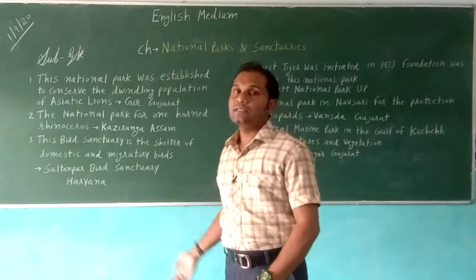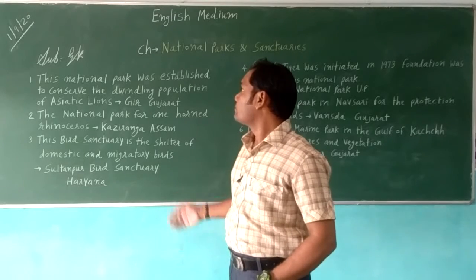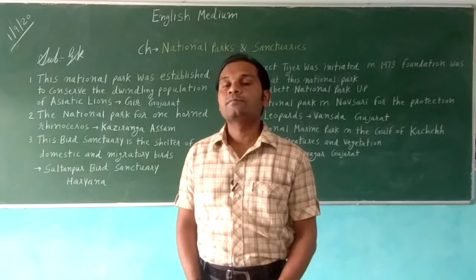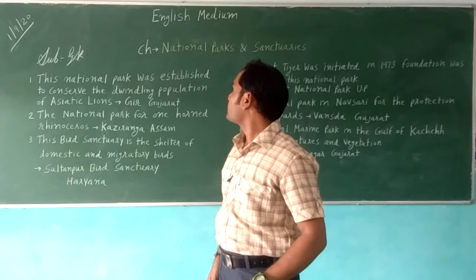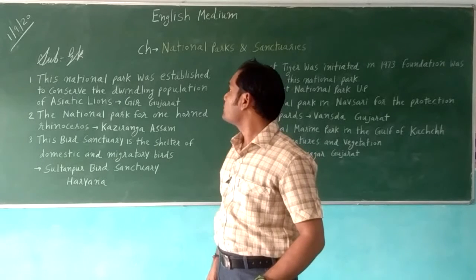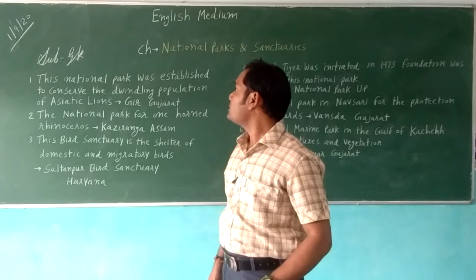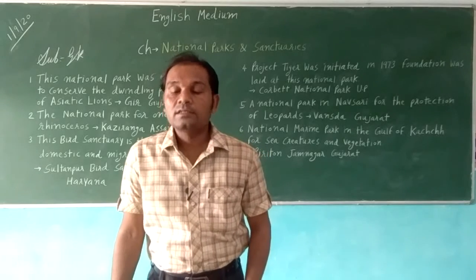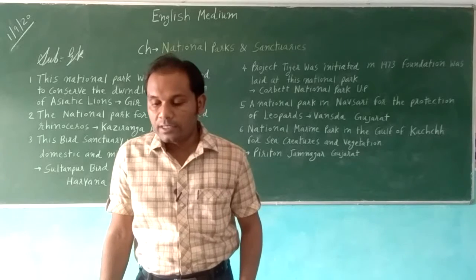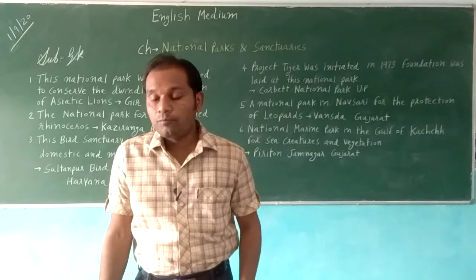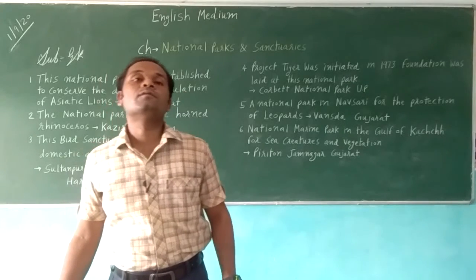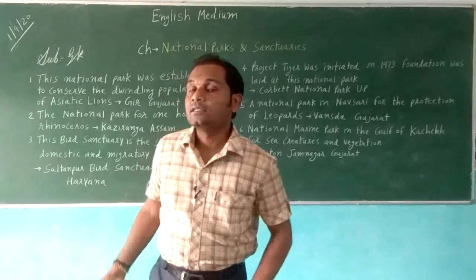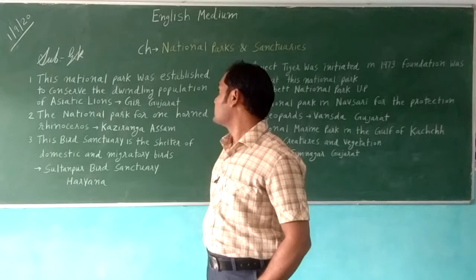Some sanctuaries in India are made for different kinds of animals to protect them. First, the Gir National Park was established to conserve the dwindling population of Asiatic lions in Gir, Gujarat. The lion population was decreasing, so to save them, the Gir National Park was built in Sasan Gir, Gujarat.